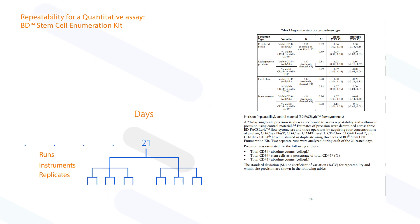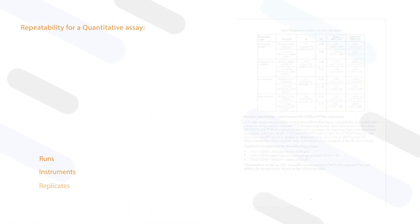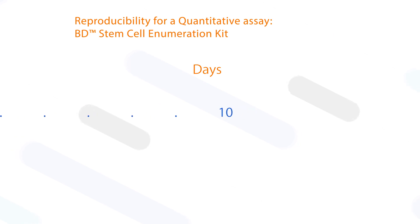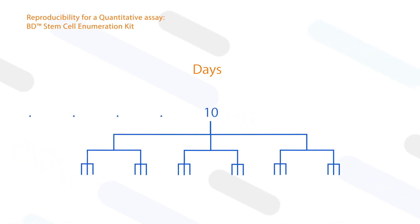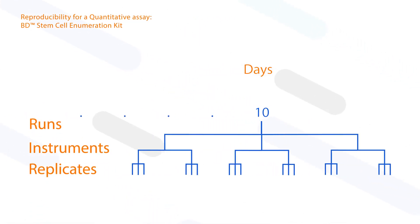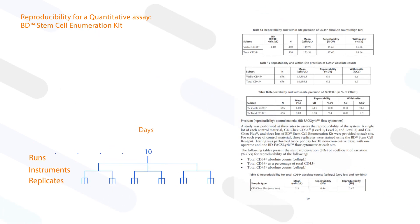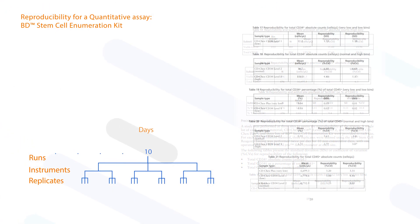To assess reproducibility, a 10-day study was performed at three sites using control material, one cytometer per site, two daily runs with four concentrations of the analytes stained in triplicates.